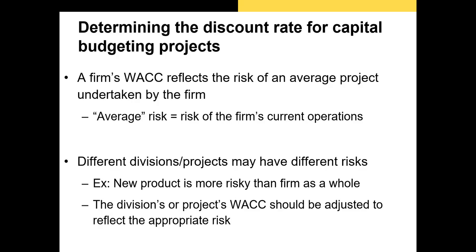A firm's WACC represents the average cost of capital of the firm, and a firm is a collection of capital budgeting projects. This means that the average capital budgeting project of the firm has a discount rate equal to the firm's WACC. For riskier capital budgeting projects, we would want to discount the cash flows with a higher rate than the WACC to account for the increased riskiness. If we want to estimate a discount rate for a capital budgeting project, we could just take our WACC and adjust it upward or downward.